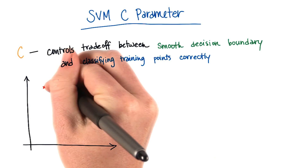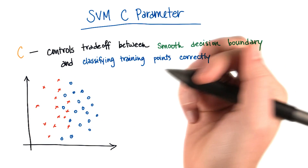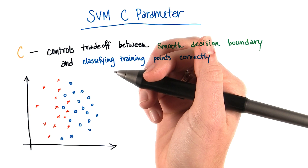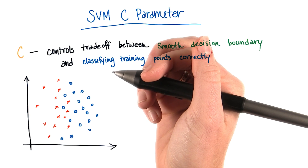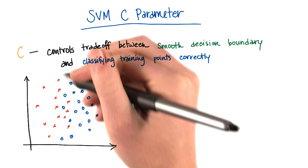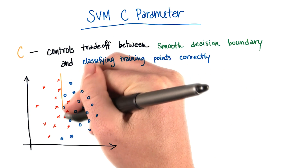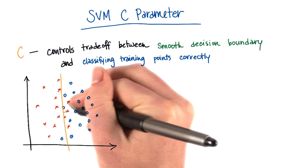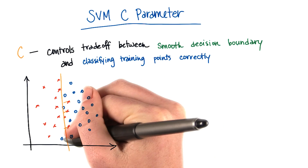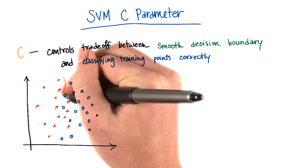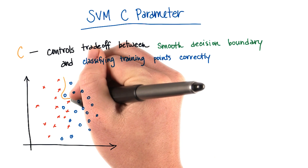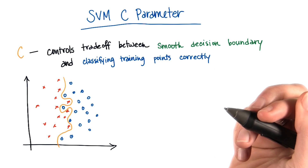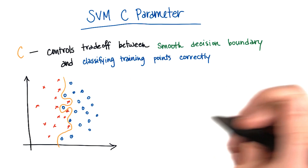Let's suppose that our data looks like this. And just like we saw with gamma, there are a number of different, completely valid decision boundaries that you can draw in here. You could draw something that might be very straight, but it comes at the cost of a few points being misclassified. You could also draw in something that's considerably more wiggly, but where you get potentially all of the training points correct.